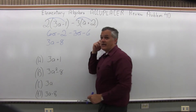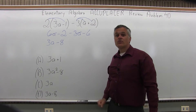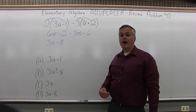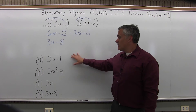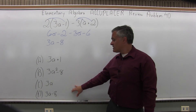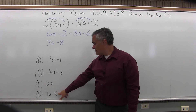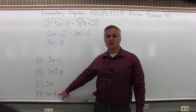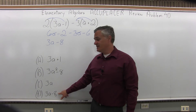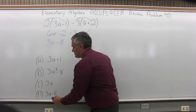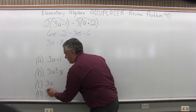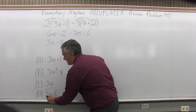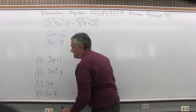So I get an answer of 3A minus 8. And as I look at my list of options, 3A minus 8 is a perfect match for option D. So the answer for problem 40 is option D.